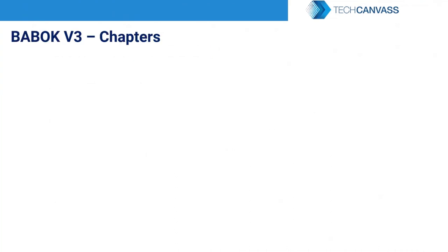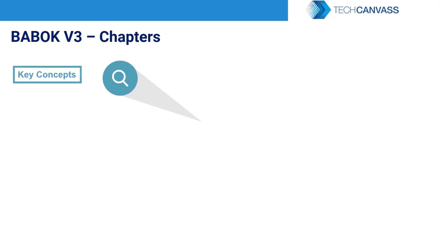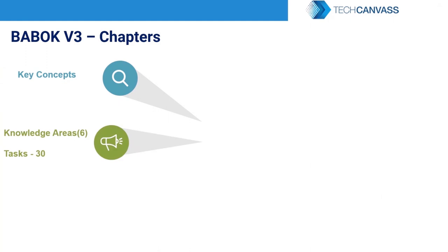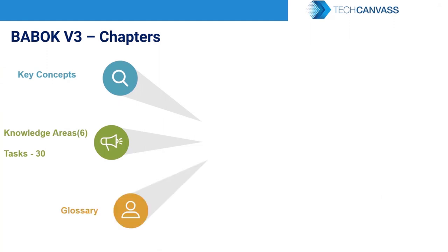Now let's look at the chapters. BABOK starts with the key concepts chapter, which describes the conceptual terms used throughout the guide. Then it describes the entire practice of business analysis into six knowledge areas. Knowledge areas are divided into tasks, and there are a total of 30 tasks — some knowledge areas have four tasks and some have six. The last chapter is the glossary of terms, which lists all key terms used in BABOK with a short definition and description.